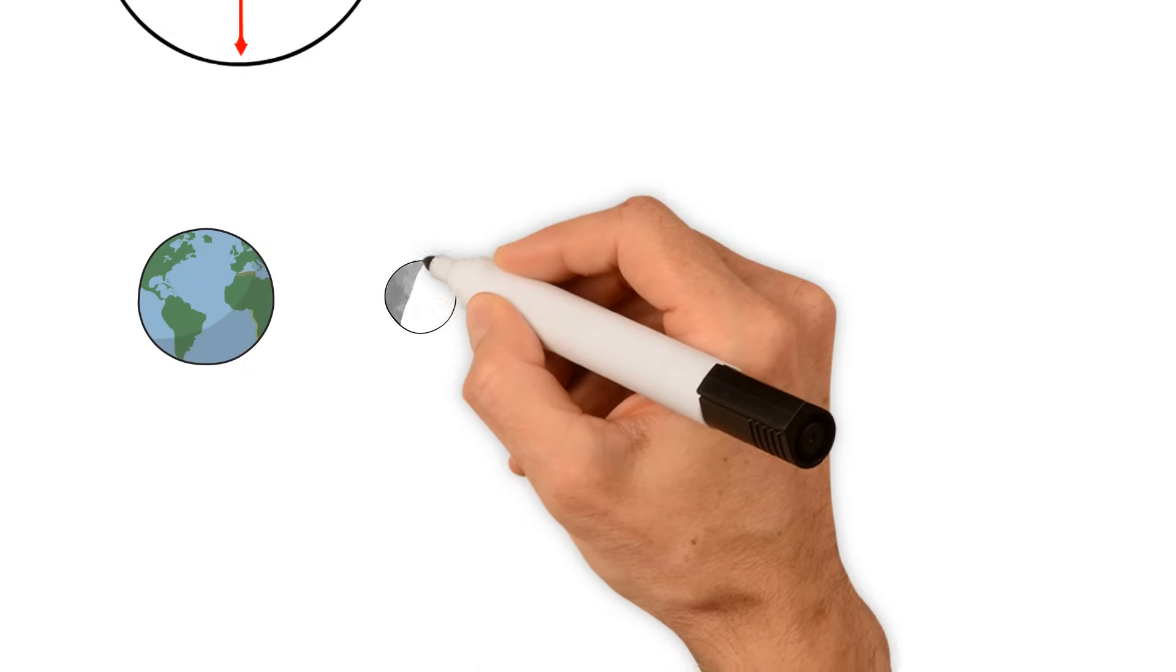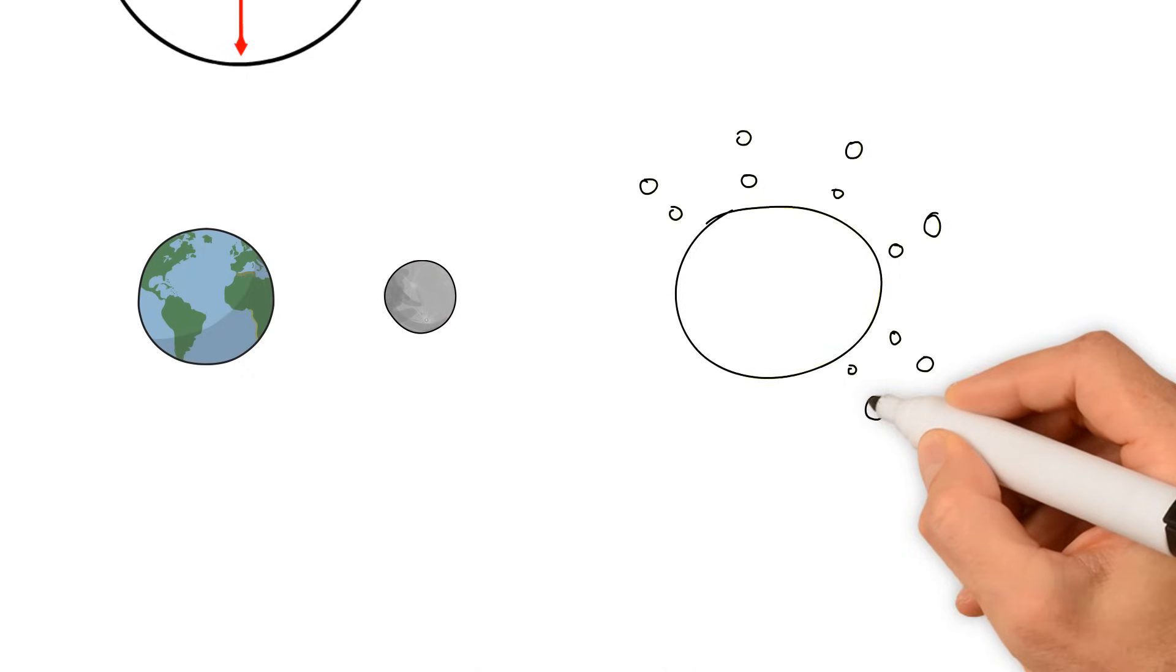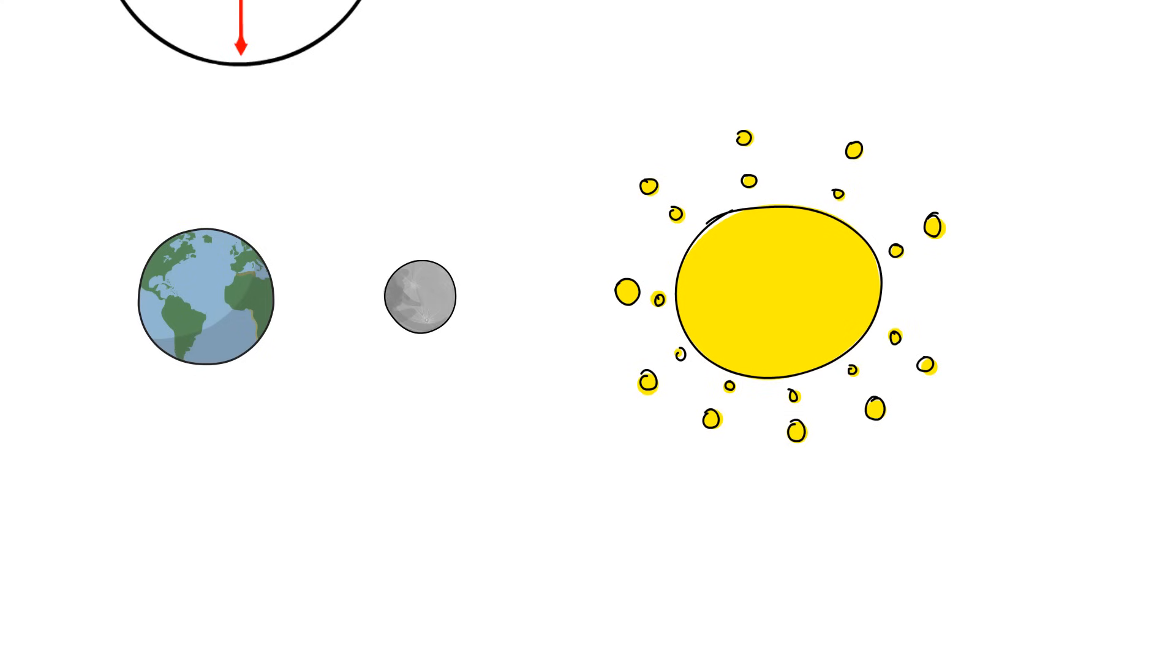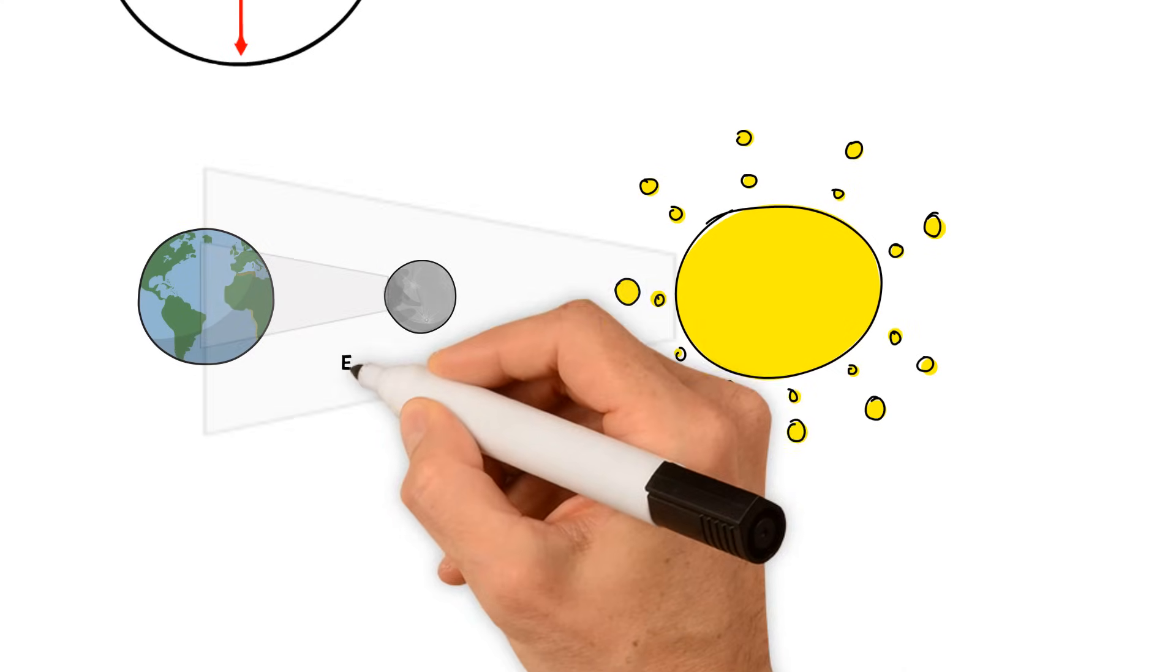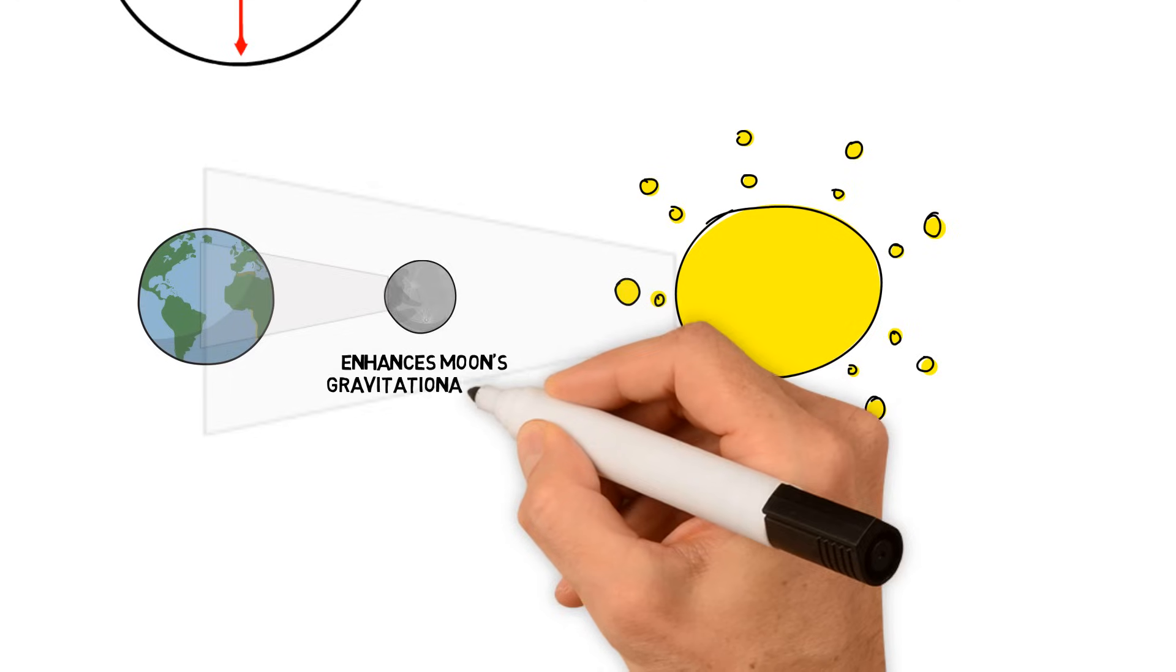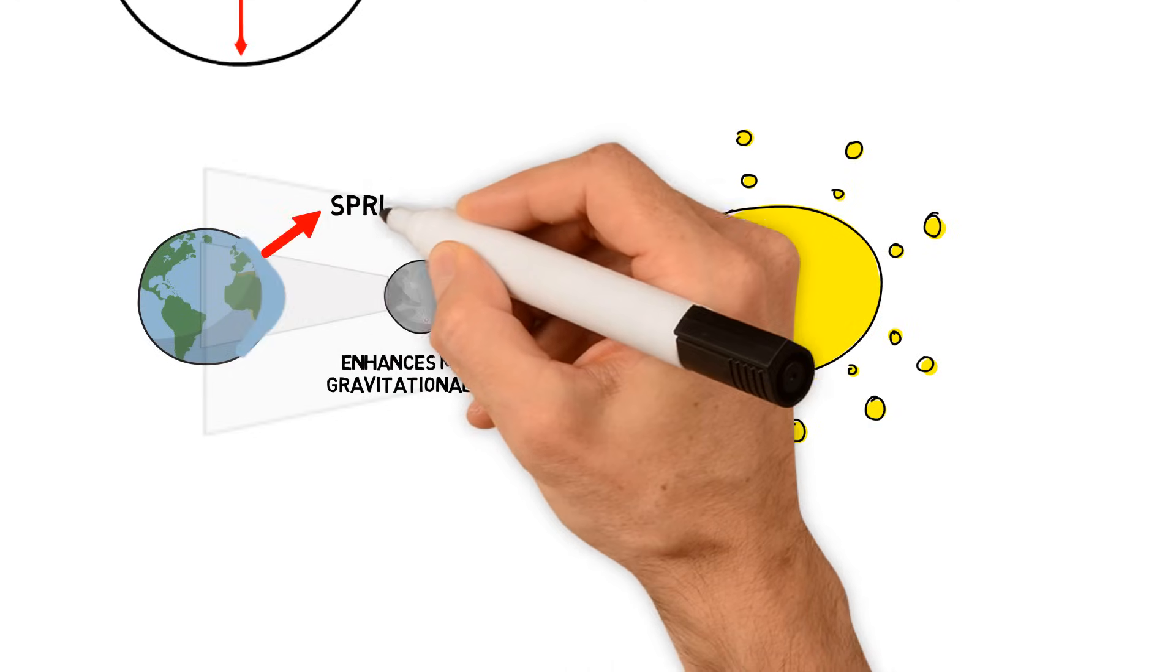When the earth, the moon, and the sun are in a straight line, the sun is behind the moon. Therefore it enhances moon's gravitational pull and that creates much higher tides. They are called spring tide.